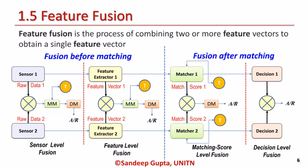Feature fusion is the process of combining two or more feature vectors to obtain a single feature vector. They can be broadly classified into fusion before mapping and fusion after mapping. The basic type of fusion before mapping is sensor level fusion, in which the raw data from sensors are simply combined. This combined data is fed to the matching module where feature values are compared against those in the template by generating a matching score. Subsequently, in the decision-making module, a user's identity is established, or a claimed identity is either accepted or rejected based on the matching score.